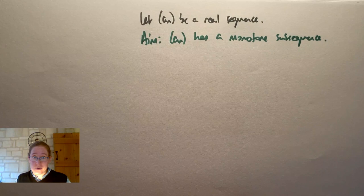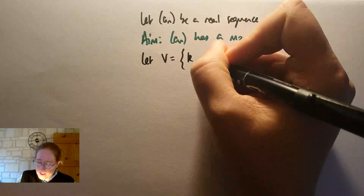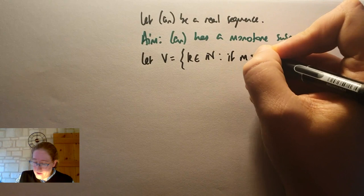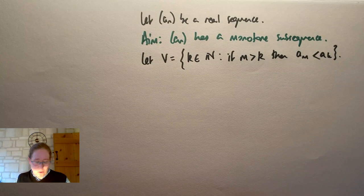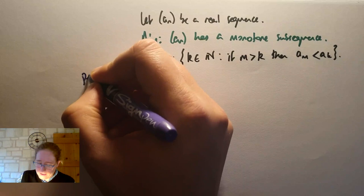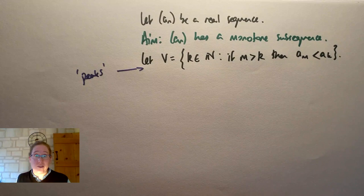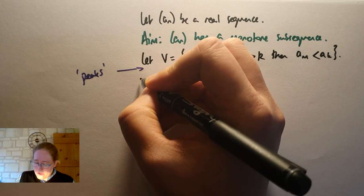So we've got a real sequence a_n. We want to show it's got a monotone subsequence. And I'm going to let V be the set of all k in the natural numbers, such that if m is bigger than k, then a_m is less than a_k. So this is the set of peaks, or scenic viewpoints. So I'll just kind of put a little note in purple somehow. These are the kind of peaks. This is not a technical term, but hopefully this helps you to kind of see how it relates to the picture that I showed you just now.